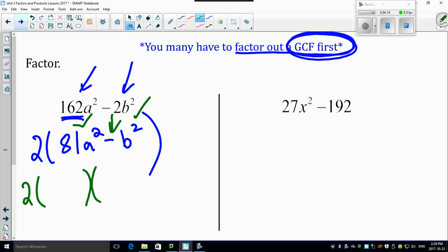So leave the 2 here. Put two sets of brackets down. Square root of this, 9a. Square root of this is b. Once a plus, once a minus, you're done. That's easy.